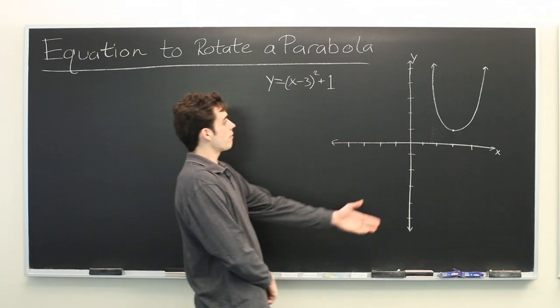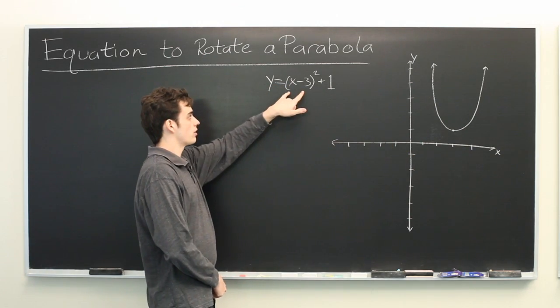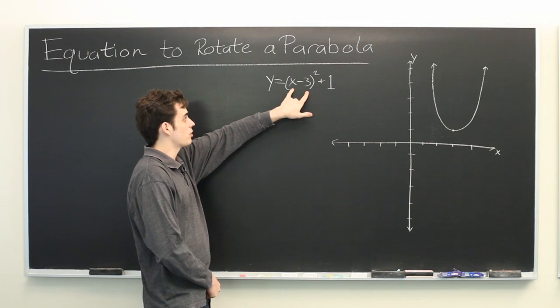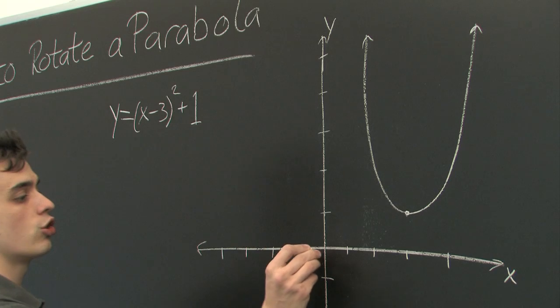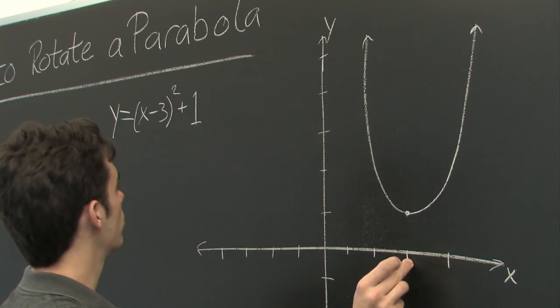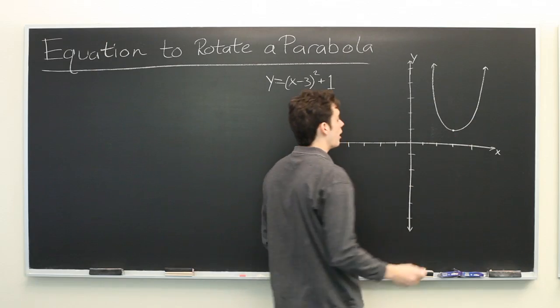So here we have a parabola that is given by the equation y equals (x minus 3) squared plus 1. Which means we are shifting the vertex of a parabola to the right 3 units and up 1 unit.